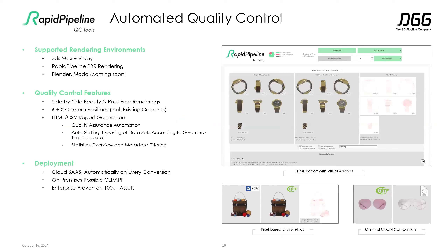The QC tools automate the process of making sure our conversions are actually working properly. We can compare different material models — for example, comparing GLTF and USDZ renders within our existing system. In the bigger window, that's showing the whole QC process where you can have multiple inputs. If you run hundreds of thousands of assets, you can filter down to just the ones that failed, and drill down into specific materials to see what's going on.